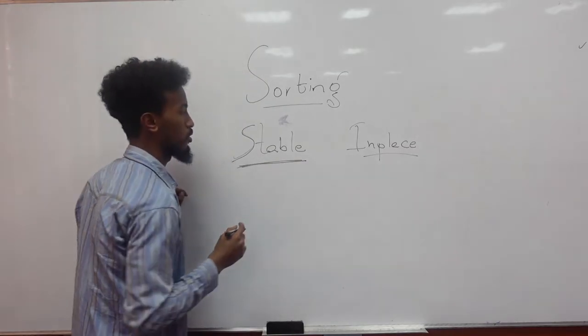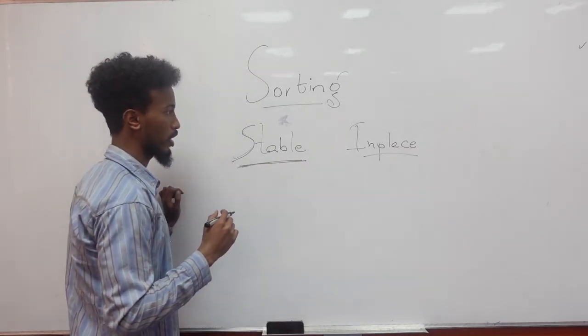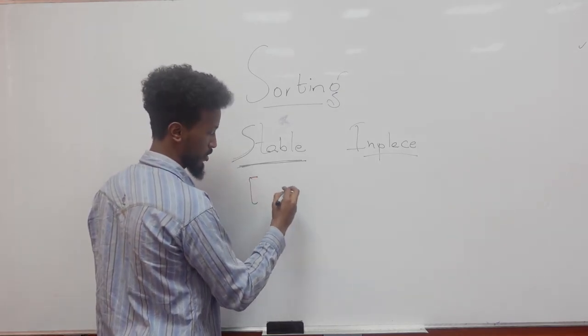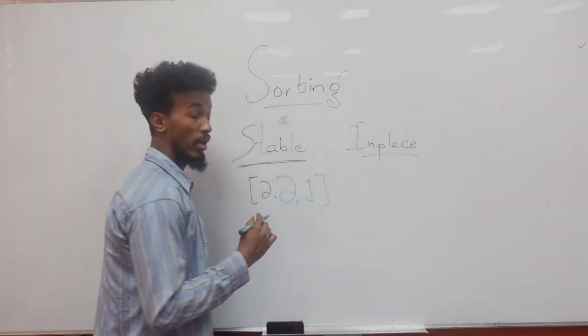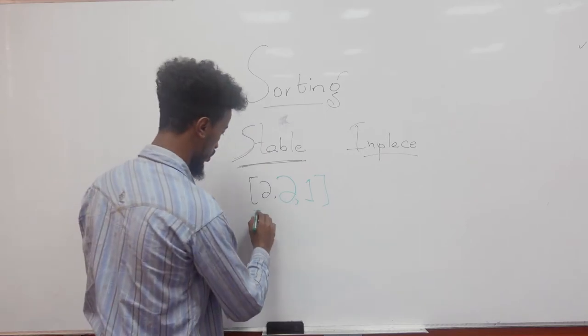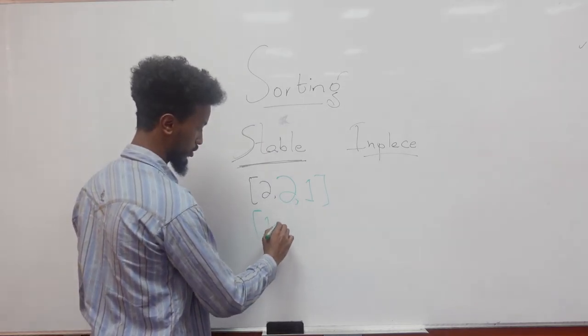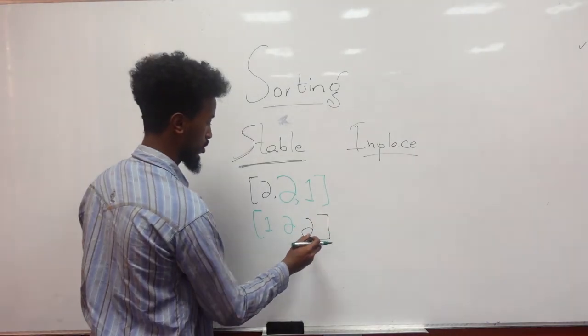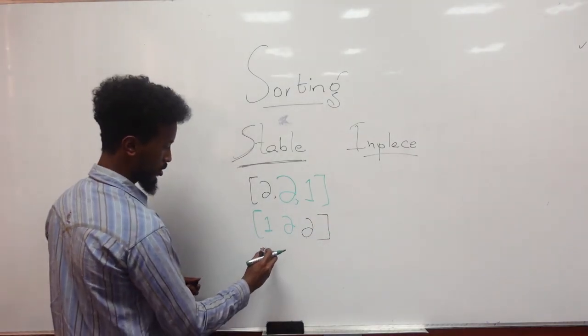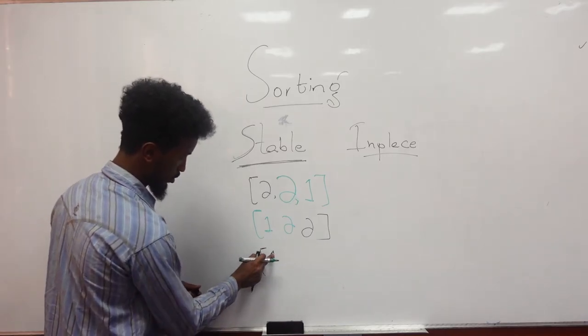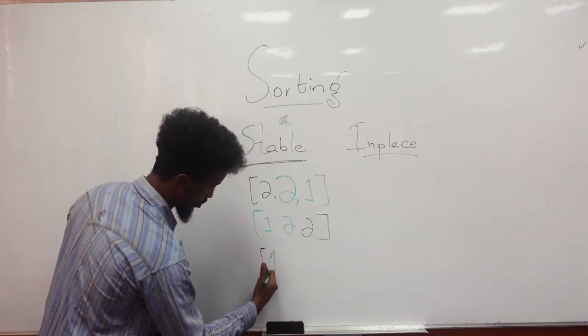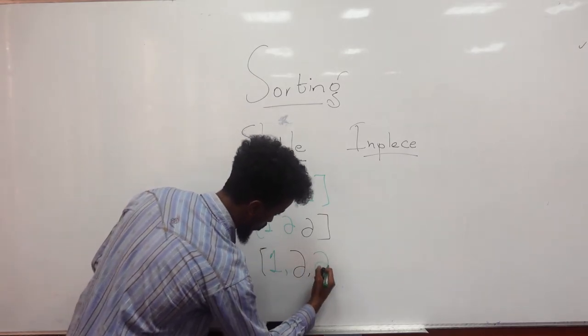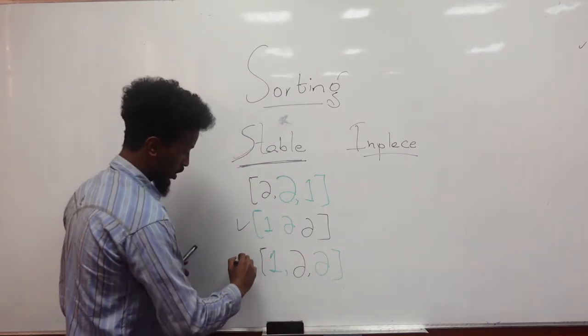When we talk about stability of a sorting algorithm, let's say we have this array. And after sorting these numbers, we could have two possibilities. One is like this, the other is like this. These both are sorted.